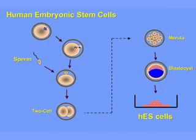Human embryonic stem cells have the capacity to become any cell in the body. This means they have multiple potential. The term for that is pluripotent.